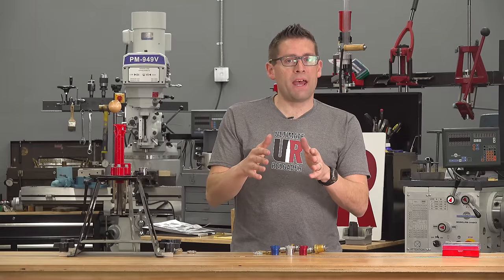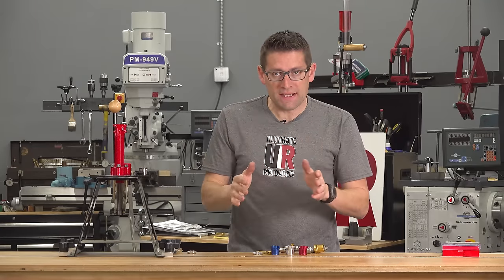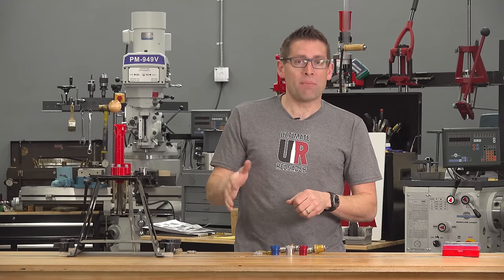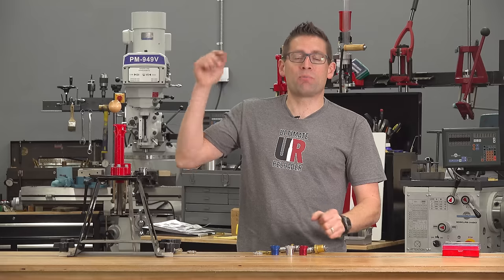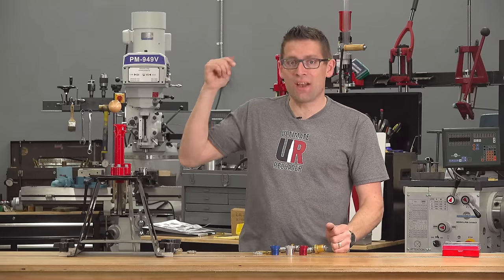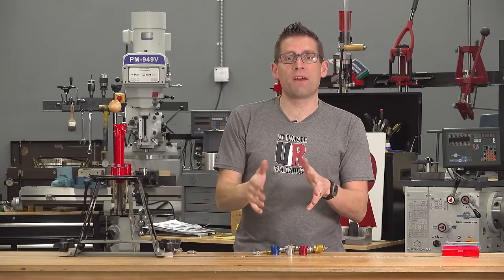So there you go. Three different types of updated Lee die lock rings that are available separately with die kits and with presses and press kits, as you saw with that recent overview video I did covering the Lee Pro 1000.